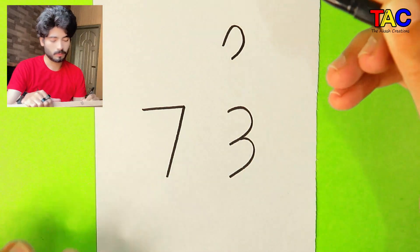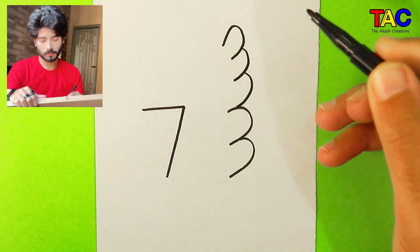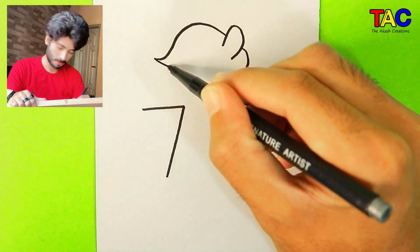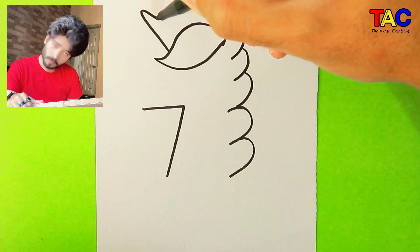Now draw unicorn ear on the top of the three. Now follow my steps. Now I am drawing unicorn horn.